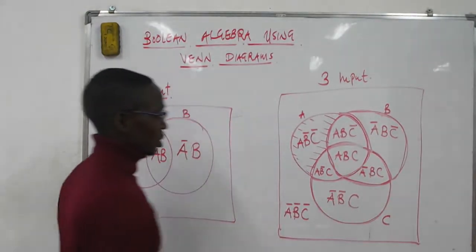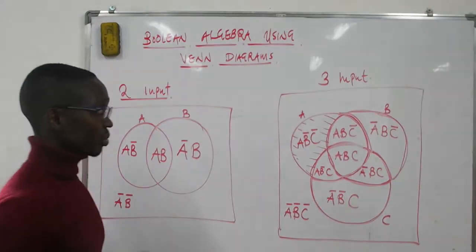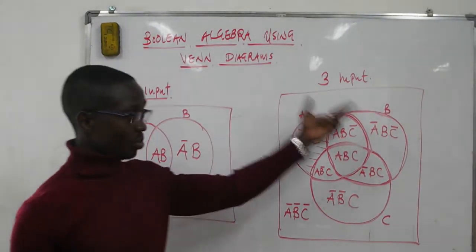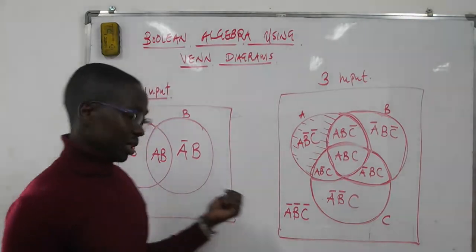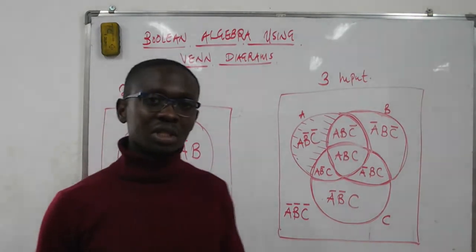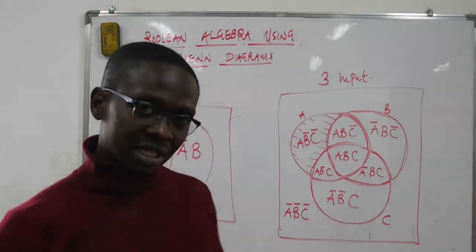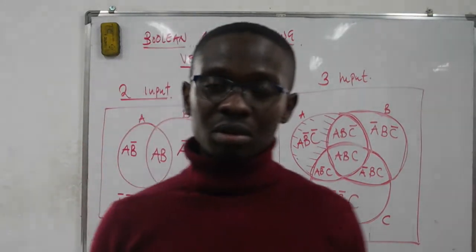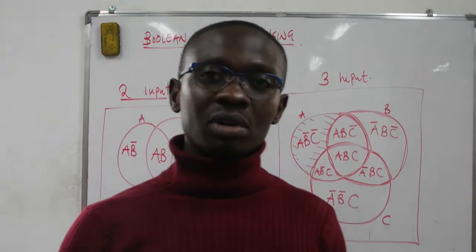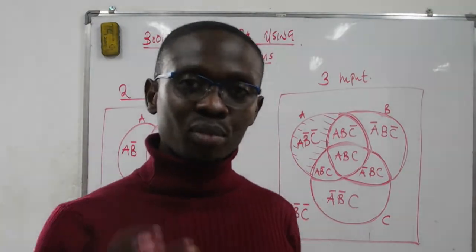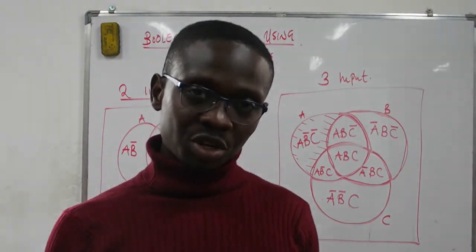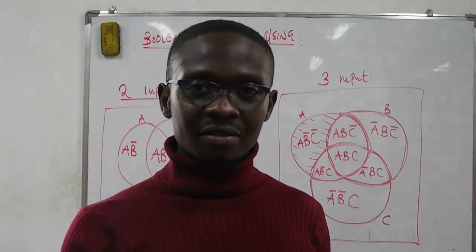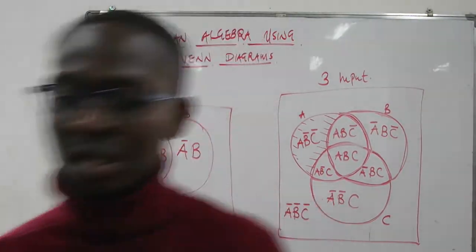With that, we have defined all the possible combinations of the input variables. In the next lecture, we are going to look at examples of how you simplify Boolean expressions using Venn diagrams.